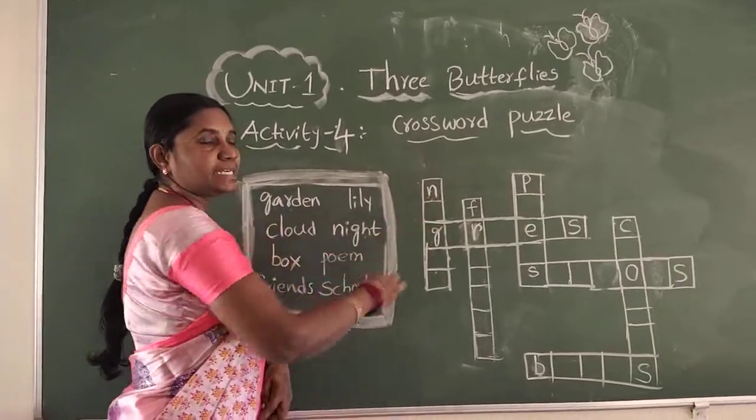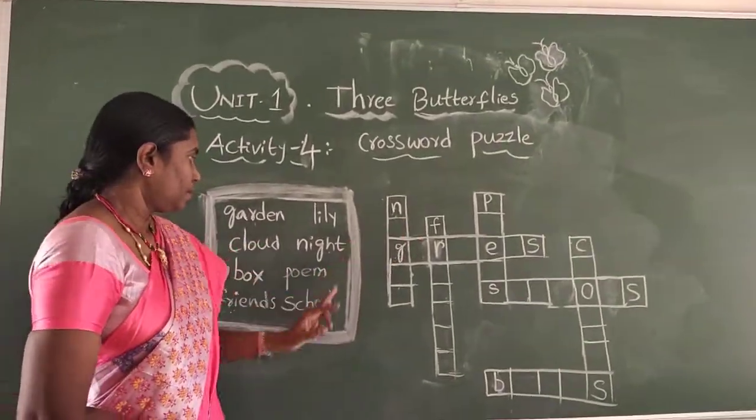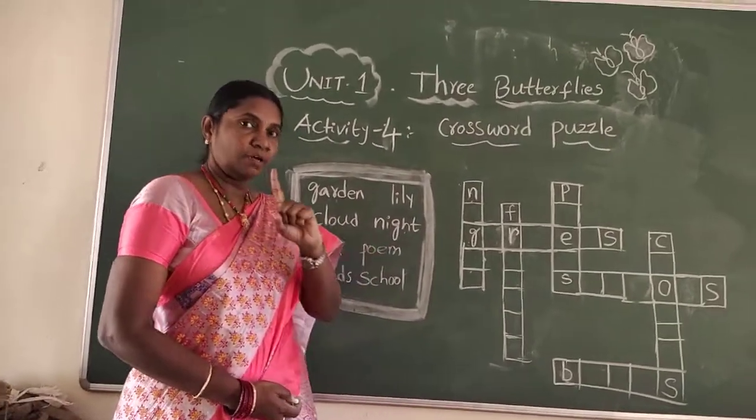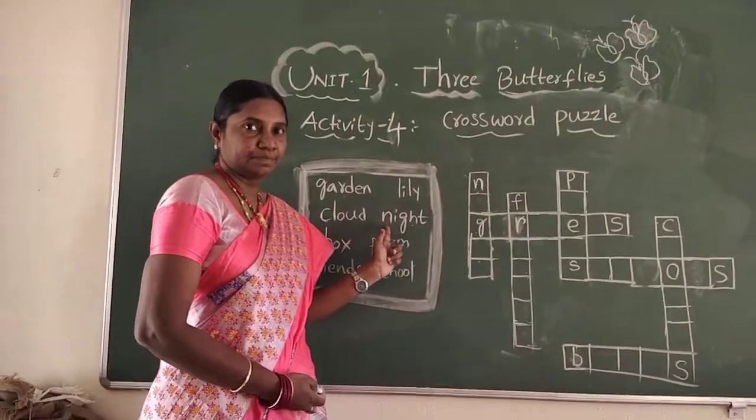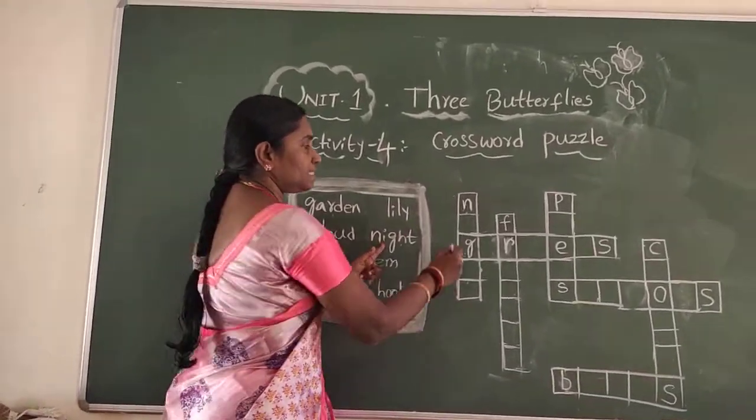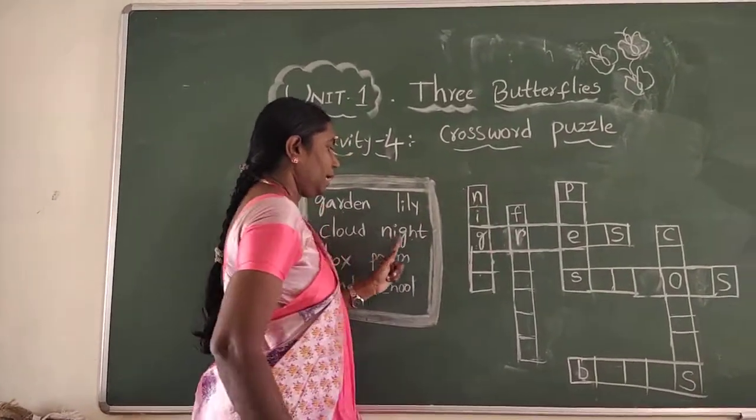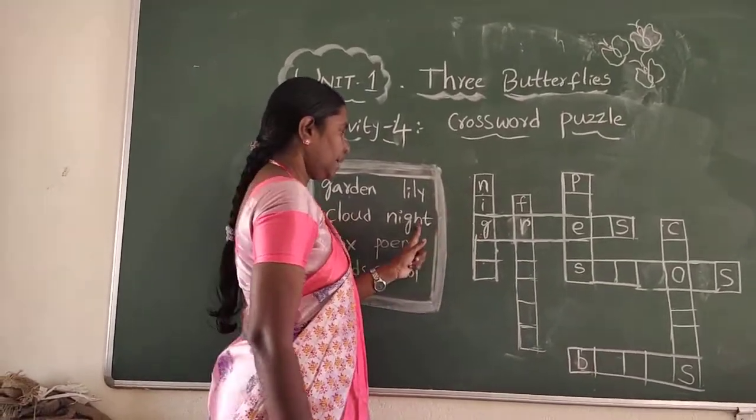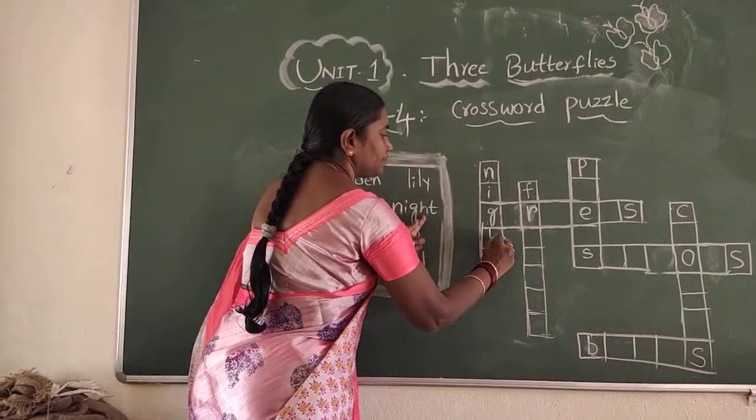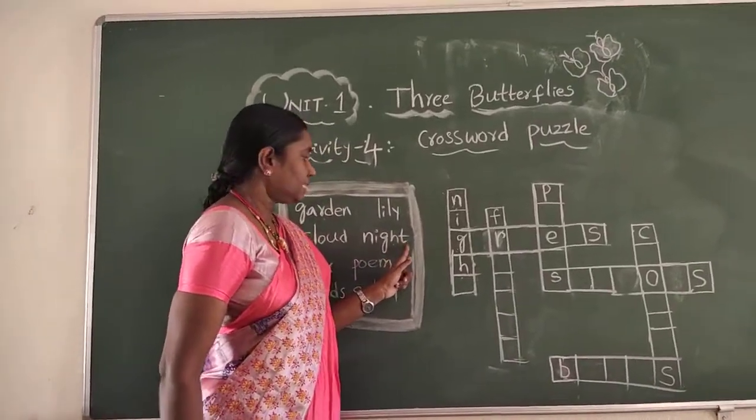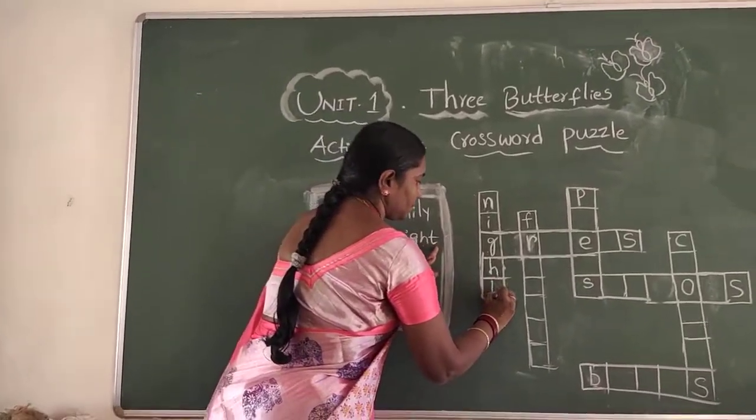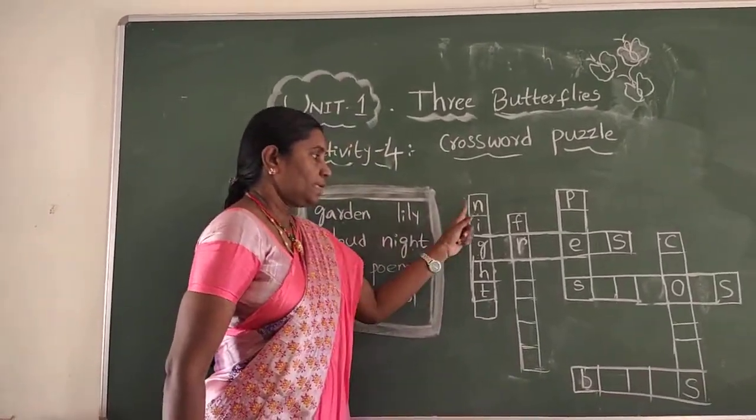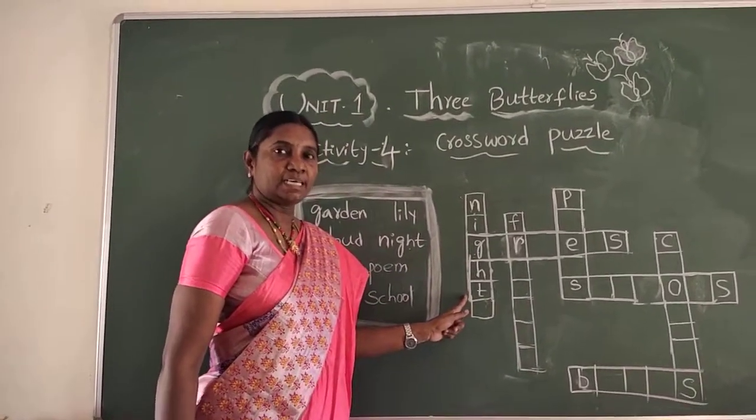And here in the first letter is N. I told you already, you have to search for the first letter. Here is N. And next letter is I. And next letter is G. Already G. And next letter is H. And next letter is T. Night.